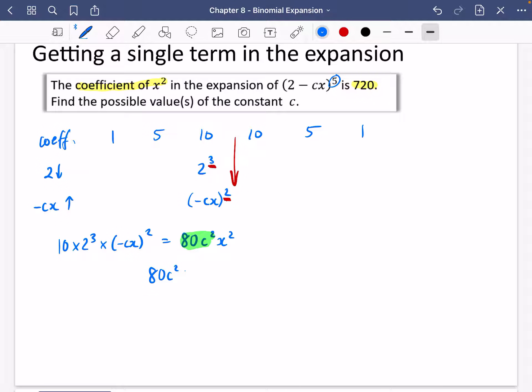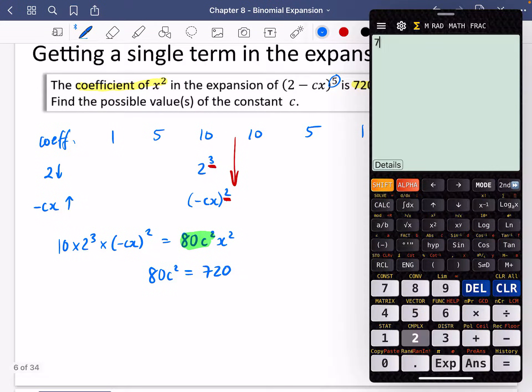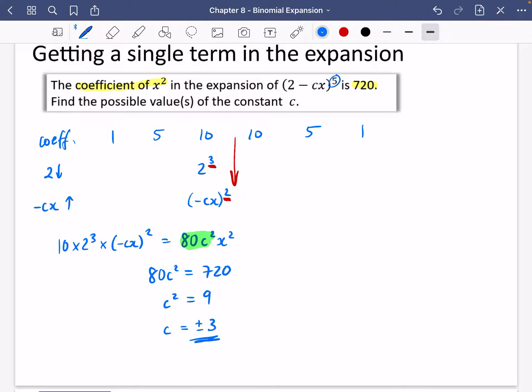So 80 c squared is equal to 720. So I'm going to do 720 and I'm going to divide it by 80, which is obviously going to be 9. And then I'm going to square root both sides so that I get that c is equal to plus or minus 3. It didn't say that c was a positive constant here. So I'm going to say that the values that c can be in this case are plus or minus 3. That would create this coefficient here being 720.